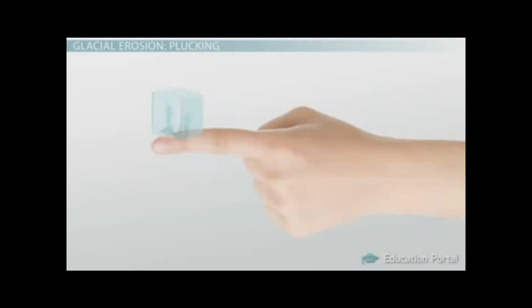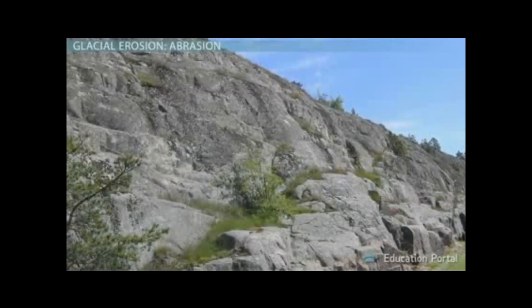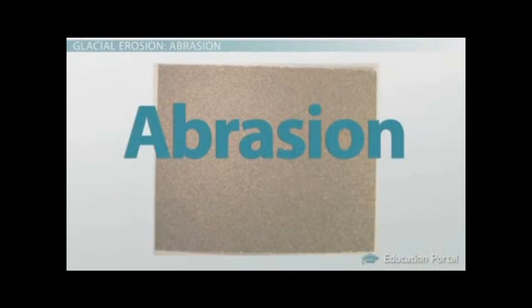If you ever put an ice cube on your finger and felt the skin of your finger stick to the ice cube, then you have a fairly good idea of how plucking works. Plucking removes rocks and by itself creates changes in the landscape, but plucking also contributes to the second process of glacial erosion, known as abrasion.